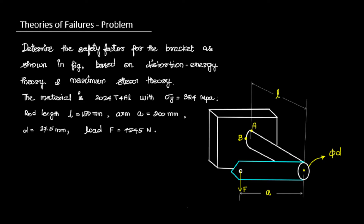There is a rod projected from the wall along the Z-axis having length L = 150 mm. At the end of the rod, an arm is attached along the X-axis having length 200 mm. At the end of the arm, the force F is acting in the downward vertical direction with a value of 4545 N.